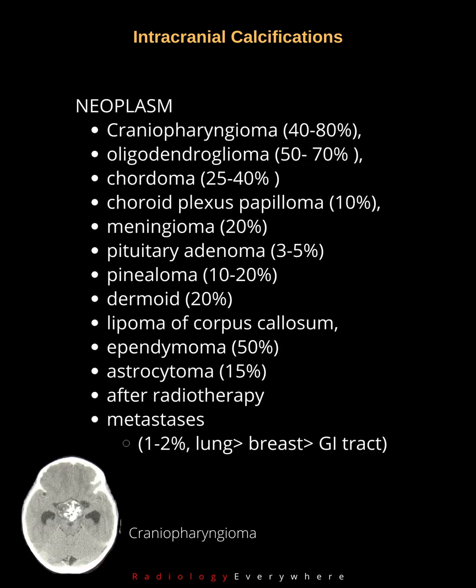Neoplasm calcifications include: craniopharyngioma, oligodendroglioma, chordoma, choroid plexus papilloma, meningioma, pituitary adenoma, pinealoma, dermoid, lipoma of the corpus callosum, ependymoma, astrocytoma, post-radiotherapy calcifications, and metastases from lung, breast, and GI tract.